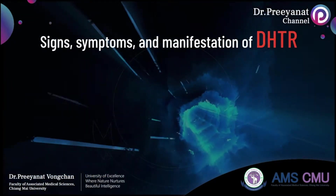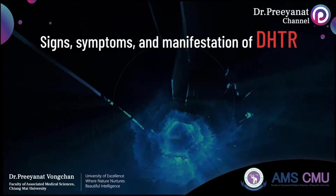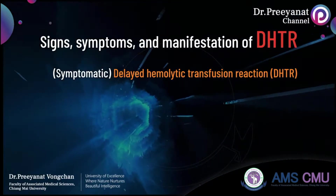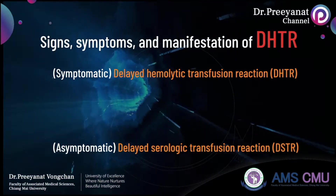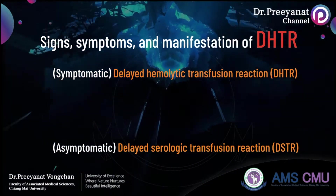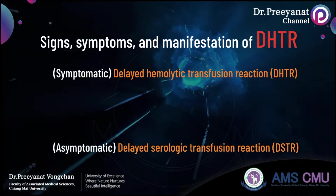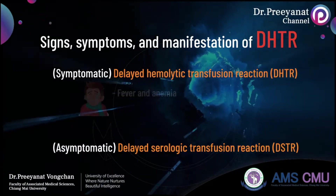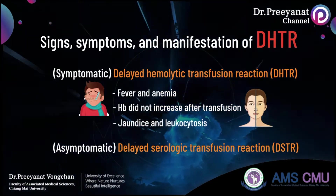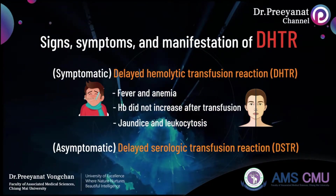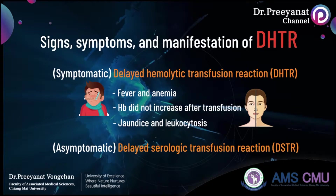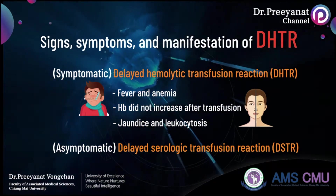Production of alloantibodies following transfusions can result in two different patterns of reaction: Symptomatic Delayed Hemolytic Transfusion Reaction (DHTR) and Asymptomatic Delayed Serologic Transfusion Reaction (DSTR). Signs and symptoms of DHTR occur days to weeks after red blood cell transfusion, resulting from extravascular hemolysis, including fever and anemia. There is no expected increase in hemoglobin level after transfusion. Some patients present with jaundice and leukocytosis. Hemolysis can occur without other clinical symptoms in some cases. Hemoglobinuria may be found but is rare.